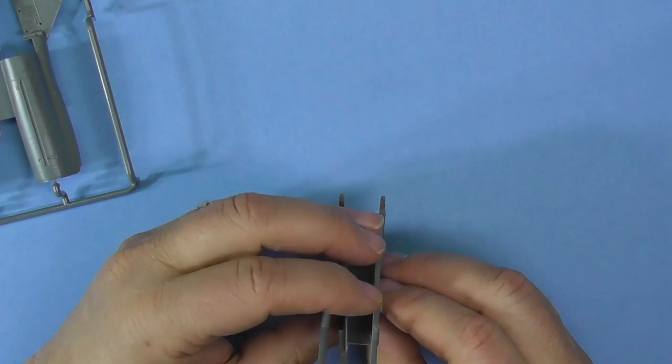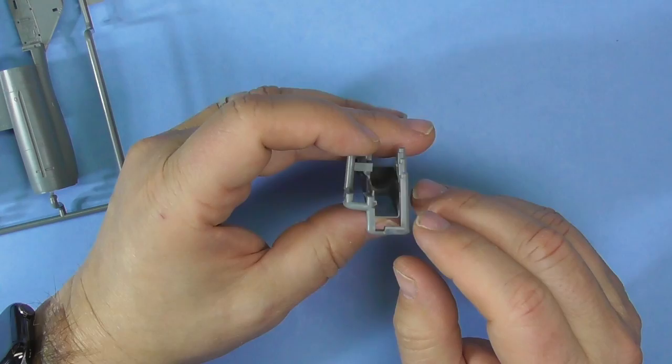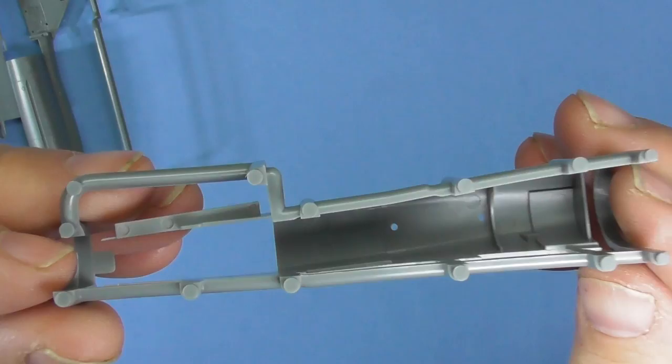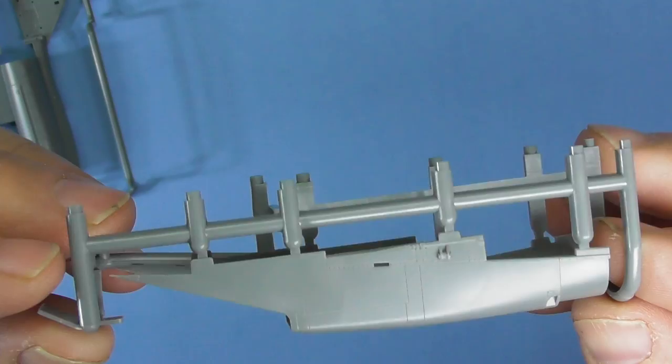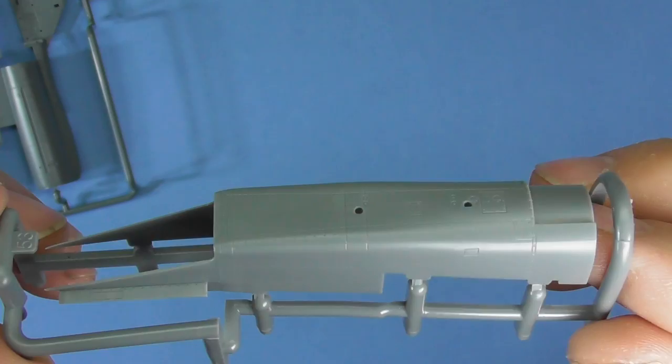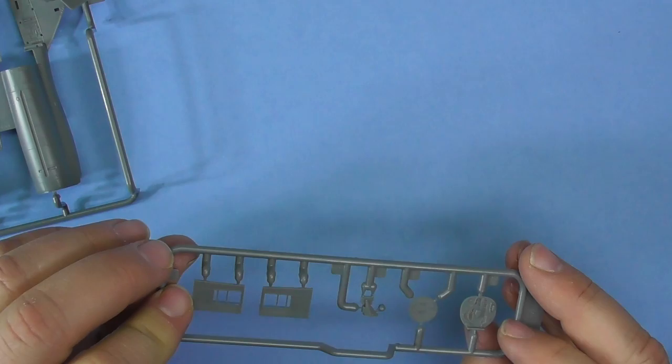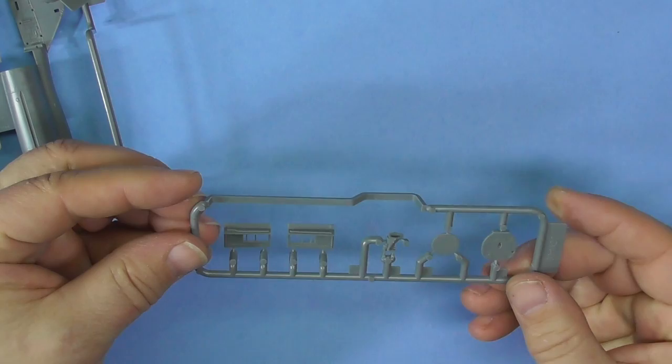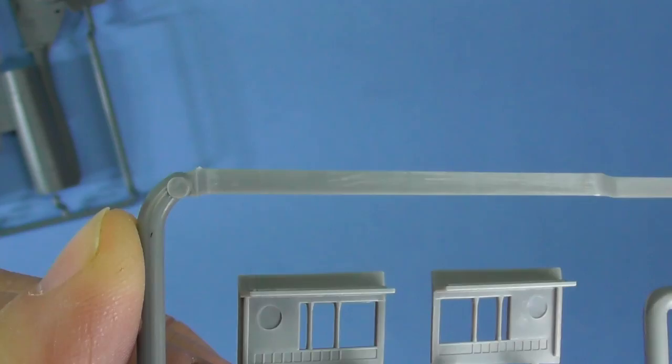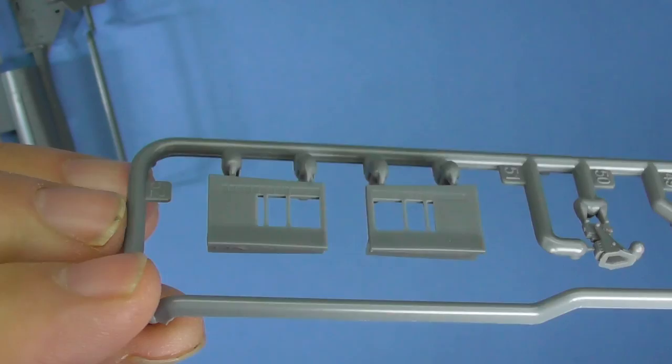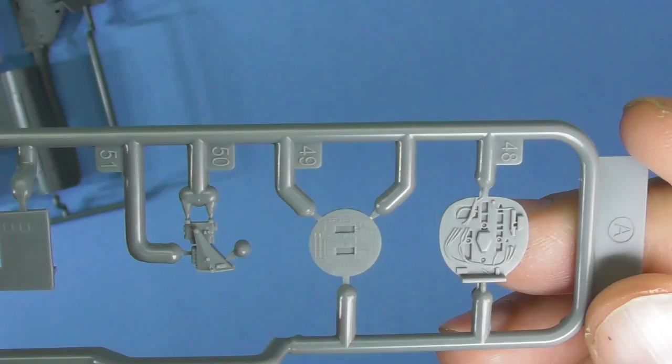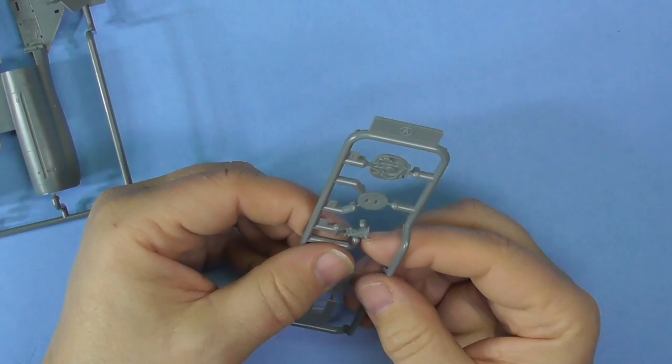There are ejector pin marks in here. They're on the bottom. I'm just not sure if you're actually going to see them when they're on the aircraft. Here I'll show them to you. They are right there. And then here's the whole beautiful intake. So two of these. And then these are matching doors and some bulkheads.